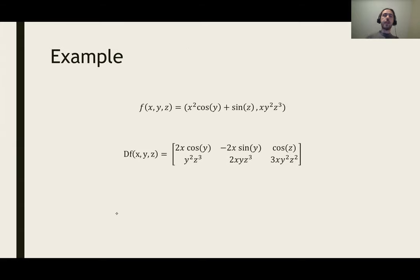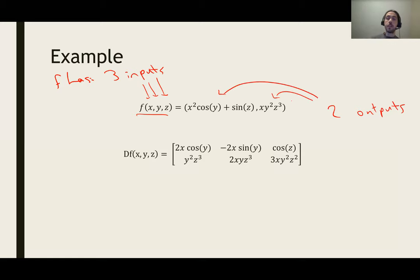Let's go over an example of calculating this Jacobian matrix. Here we have a function f. f has three inputs, x, y, and z, and they're listed in a row here, and it also has two outputs: x squared cos y plus sine z, and x y squared z cubed.